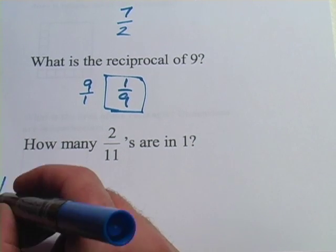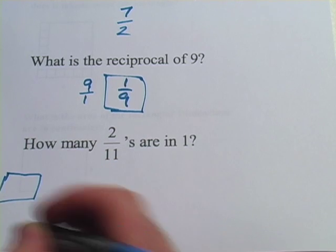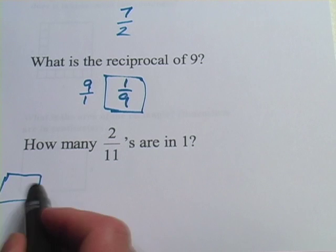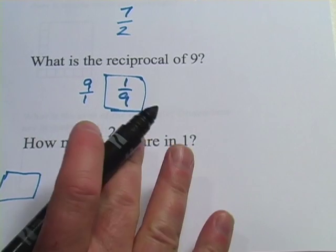So if you had 1, let's say this box is 1, and you'd chop that up into 11 parts and then filled, shaded in 2 of them, how many would be in there to make up that 1?